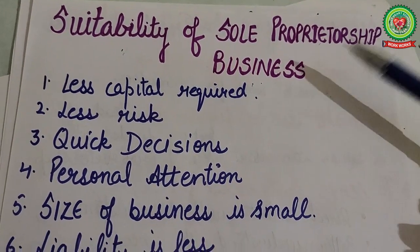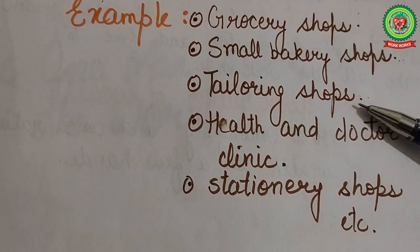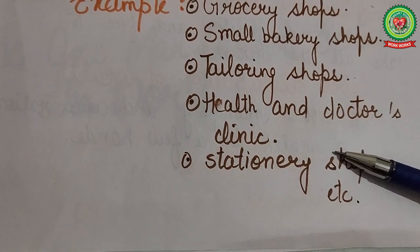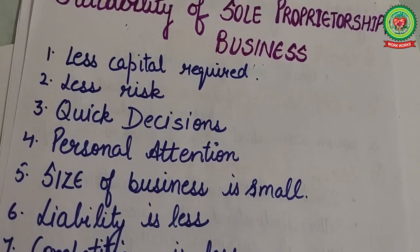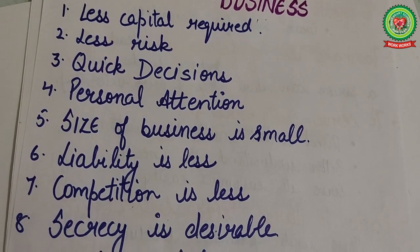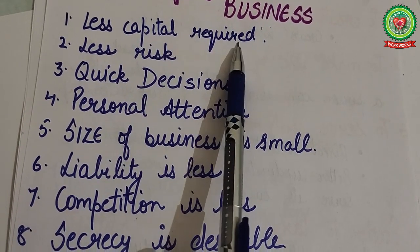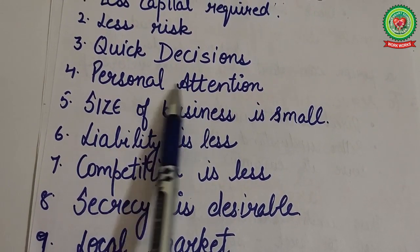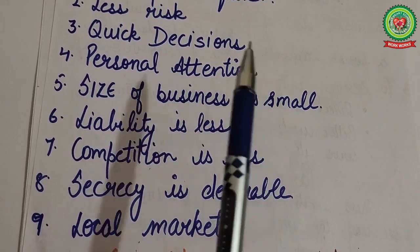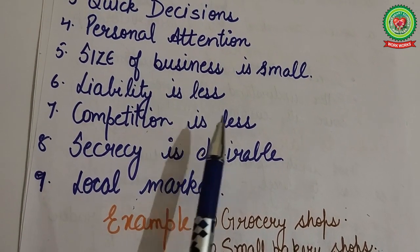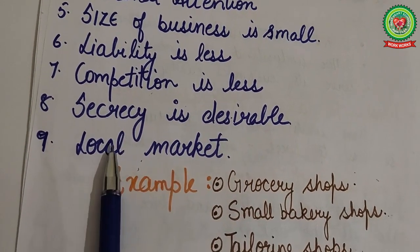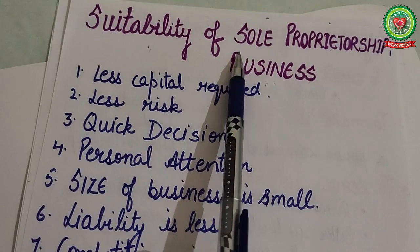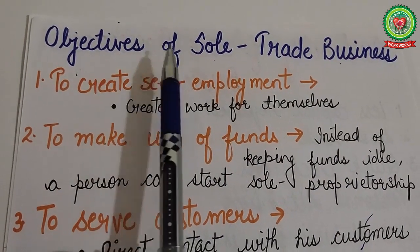Our first topic is the suitability of sole proprietorship business. Examples include grocery shops, small bakery shops, tailoring shops, health and doctor clinics, and stationary shops — all suitable for small-scale business. Sole proprietorship is suitable where less capital is required, where there is less risk, where quick decisions are necessary, where customers require personal attention, where the size of business is small, liability is less, competition is less, secrecy is desirable, and the market of the commodity is local.